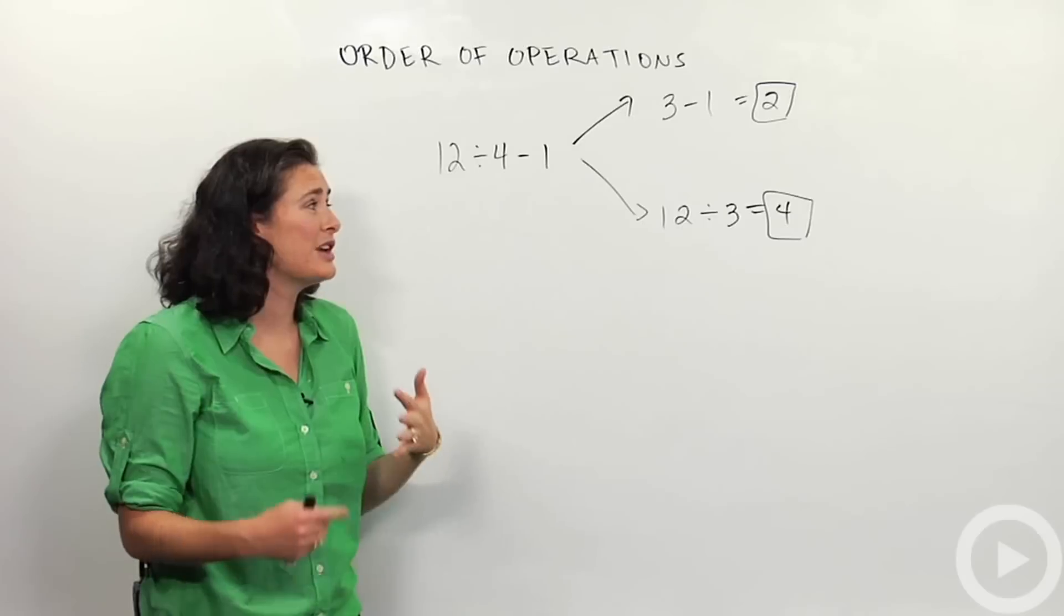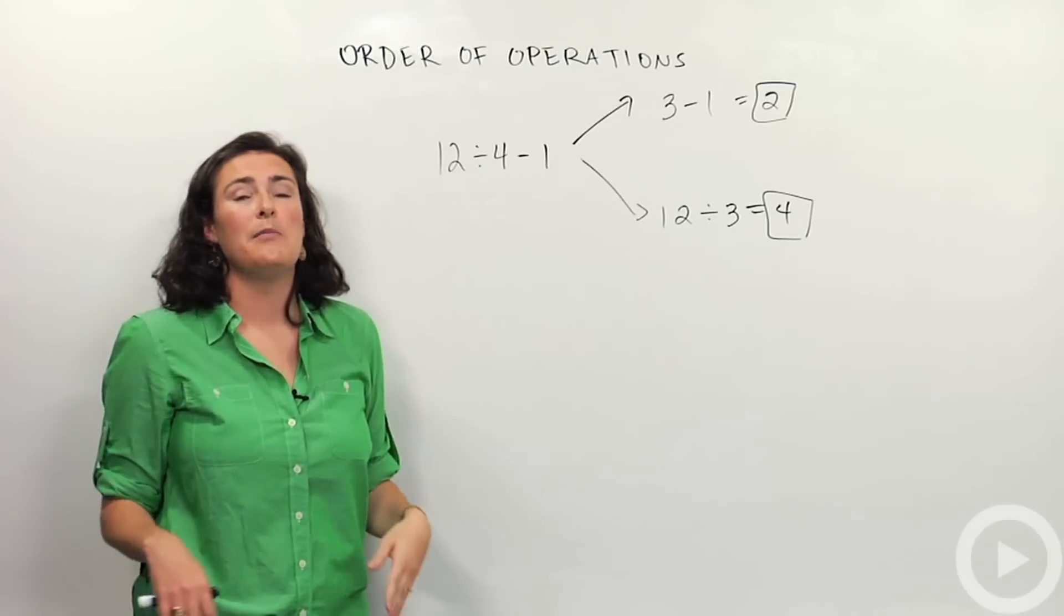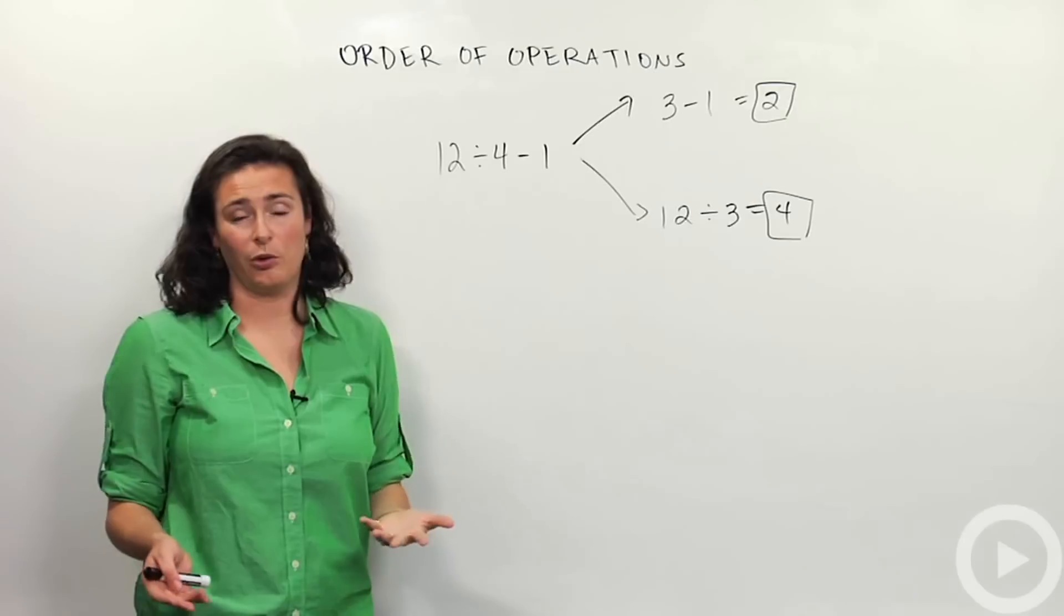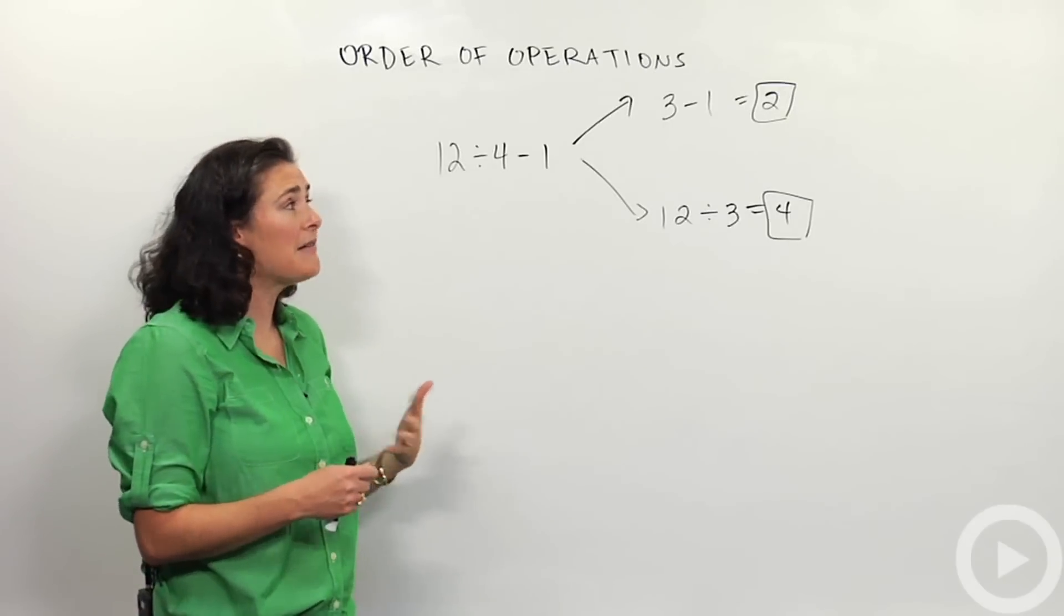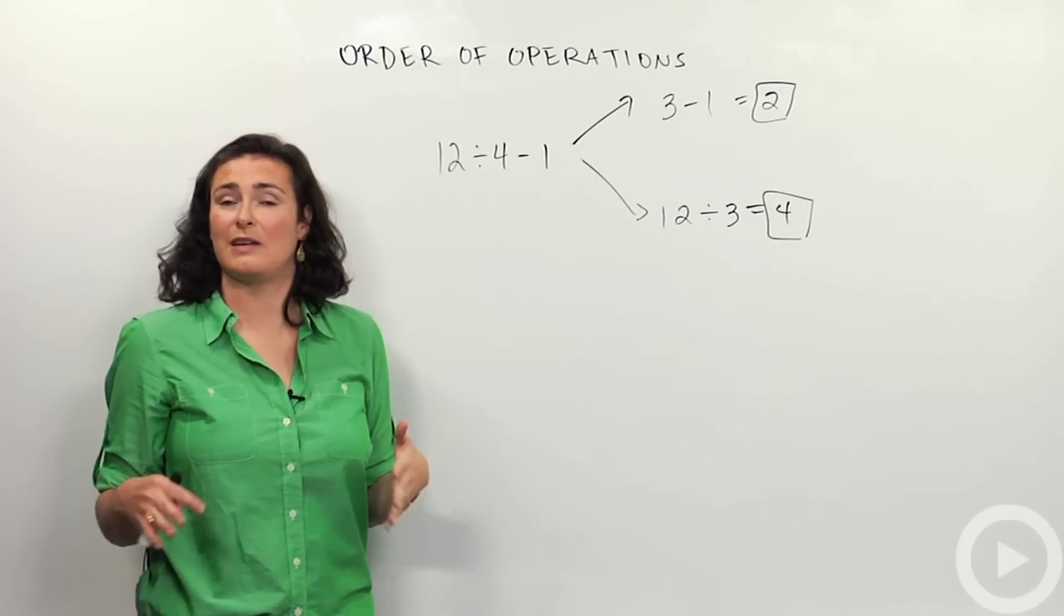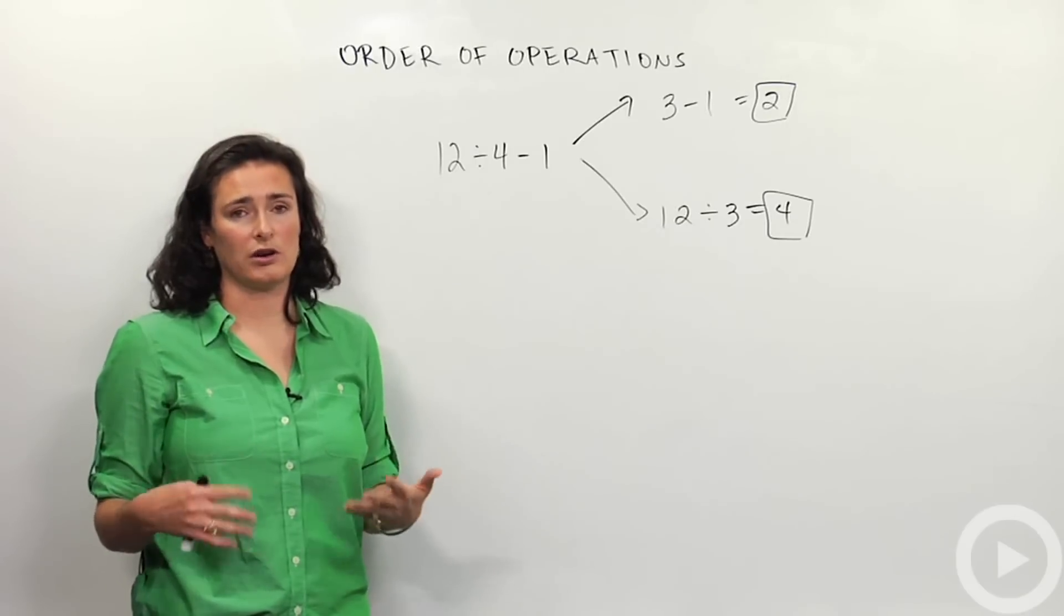So in order to get rid of this confusion, mathematicians created what we call the order of operations. It's a really big deal. Every person on the whole planet who does math correctly uses this order of operations.